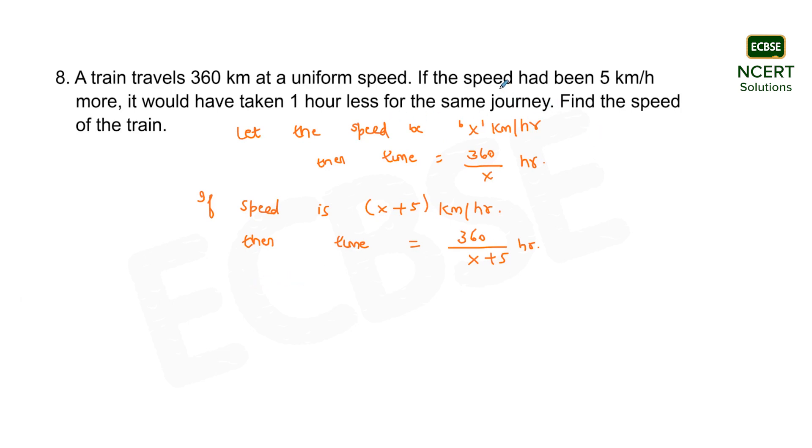So now, it also says that if the speed had been 5 km per hour more, it would have taken 1 hour less for the same journey. This means the difference between the time before and now, when the increase in speed is 5, equals 1 hour which is less. That is, this time is less than the time taken before. So 360 by x is greater than 360 by x plus 5. We will write 360 by x minus 360 by x plus 5 equals 1, as 1 hour less time has been taken when the increase in speed is 5. Taking the LCM, it will be 360 times x plus 5 minus 360x divided by x times x plus 5 equals 1.